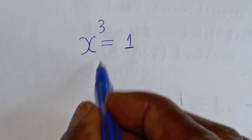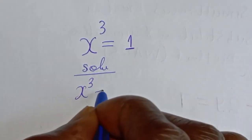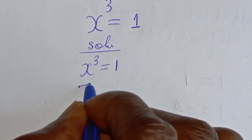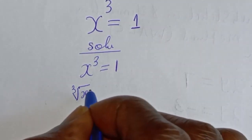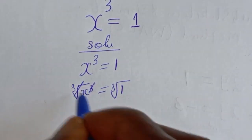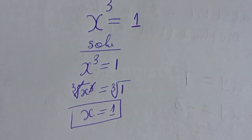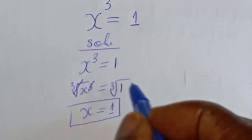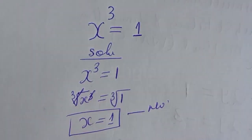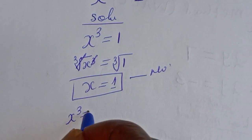s raised to power 3 is equal to 1. What is the value of s? Let's take the cube root of both sides. Cube root of s raised to power 3 is equal to cube root of 1, so s is equal to 1. But is this the only answer? No — let's find other solutions to this equation s³ = 1.